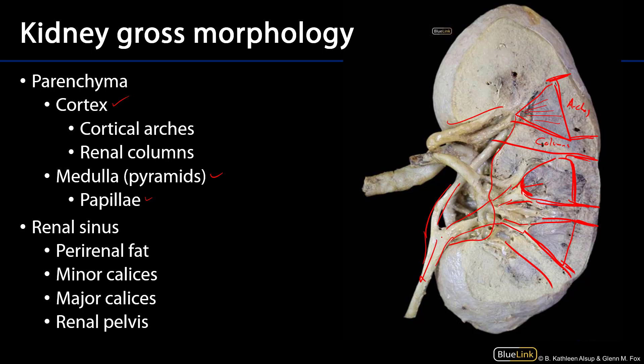Within that space we also find copious amounts of perirenal fat. Perirenal fat or adipose tissue encompasses everything within the renal fascia, and the renal fascia surrounds the kidney, the suprarenal glands, the ureters, and all of that perirenal fat.